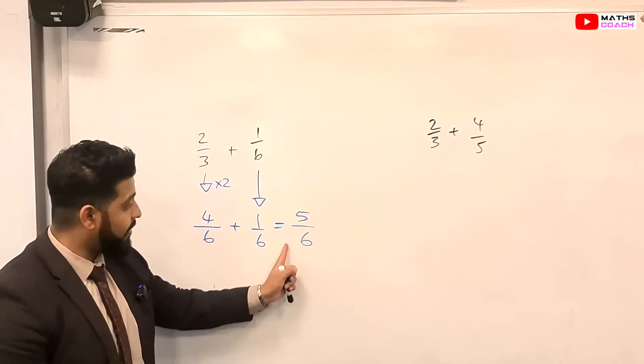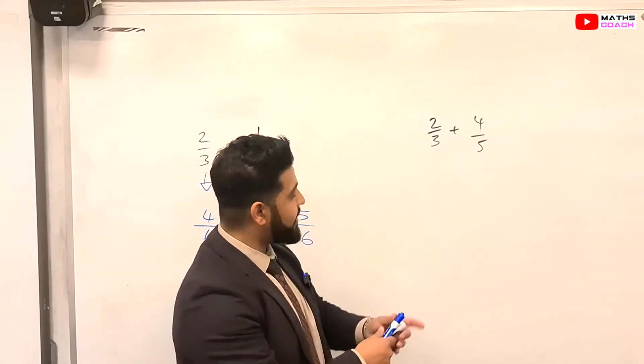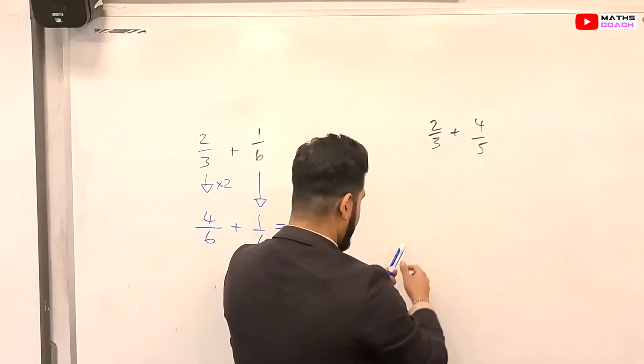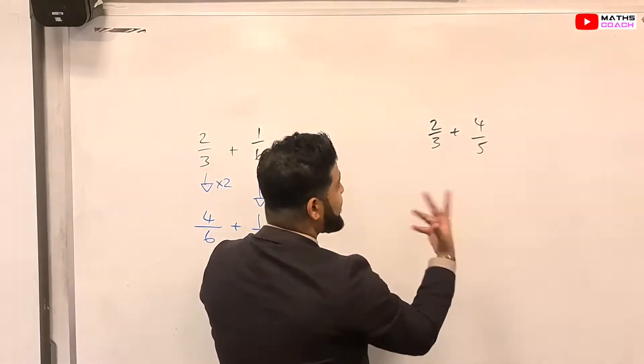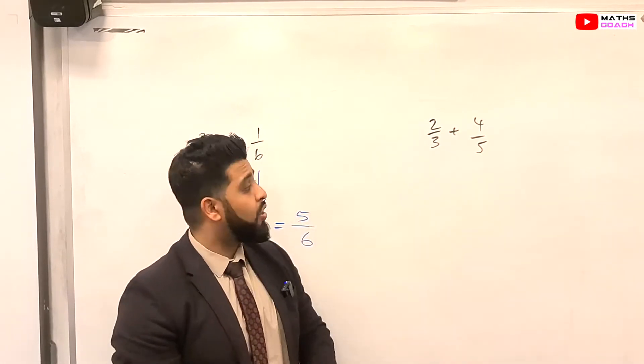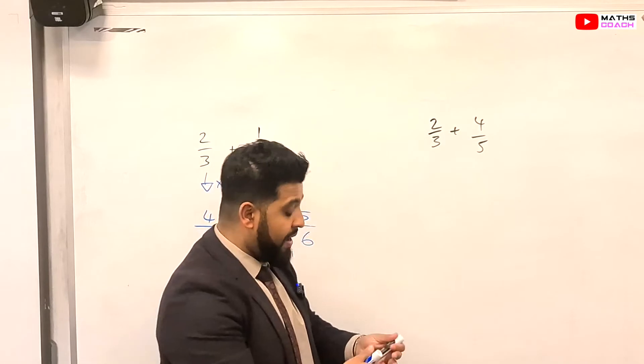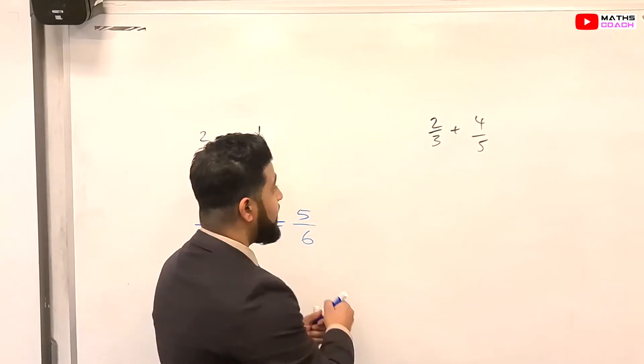So now, can you see the final answer has the same denominator as both of these? Right, so let's have a look at this one now. So we've got 2 over 3 plus 4 over 5. So, once again, we want to have something in common between 3 and 5. So you will know that 15 is common between 3 and 5. But how do you get 15? This is the question.